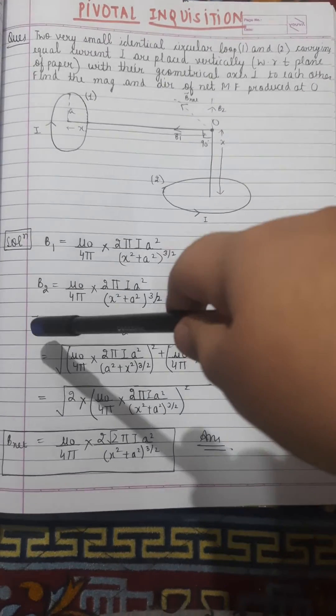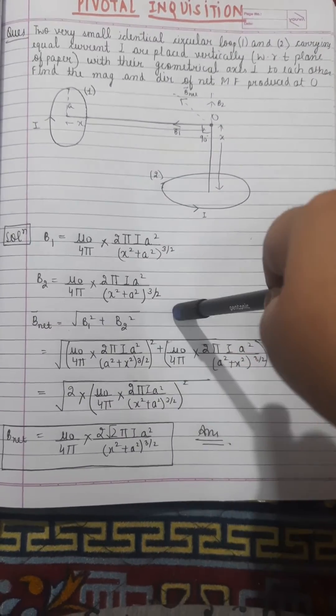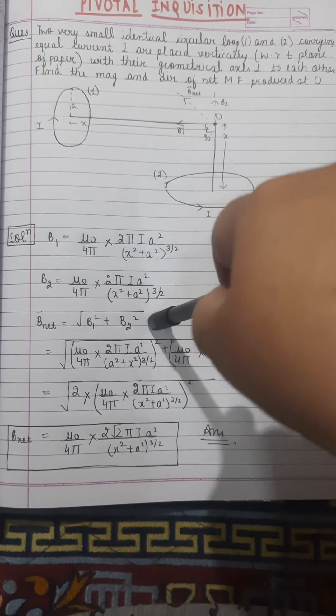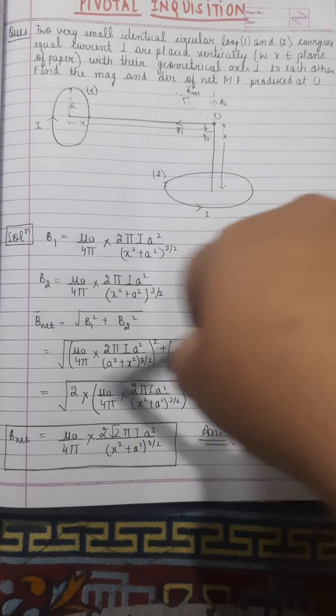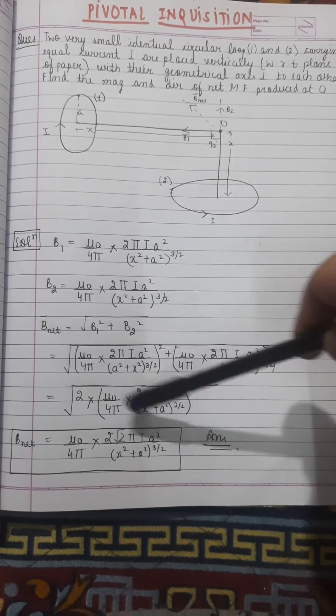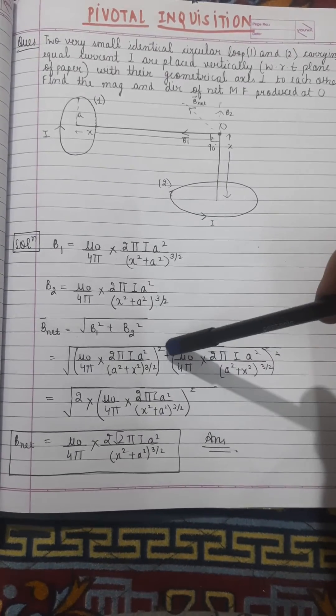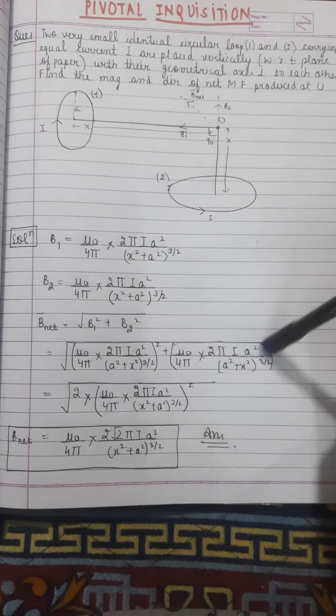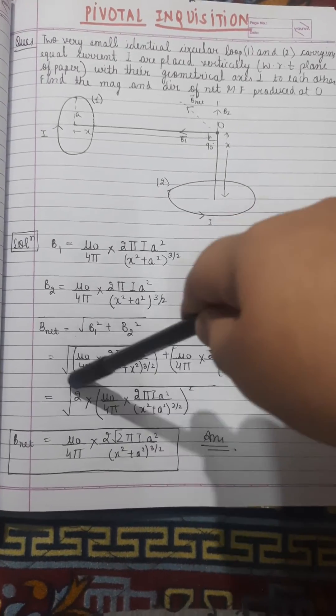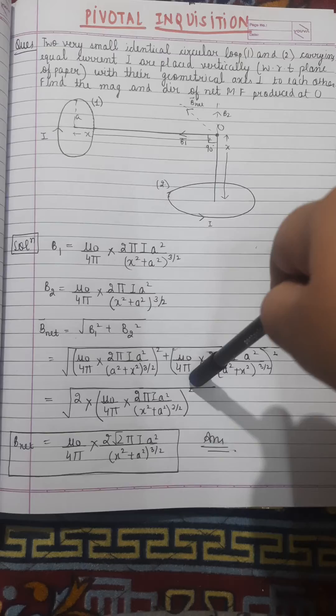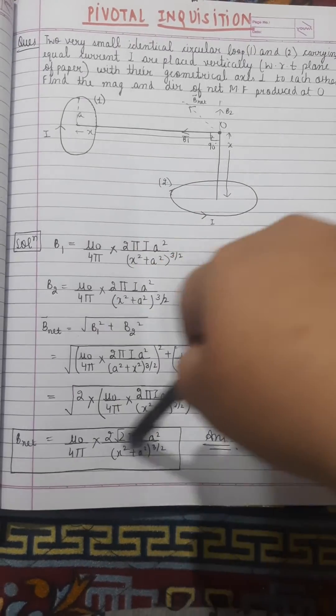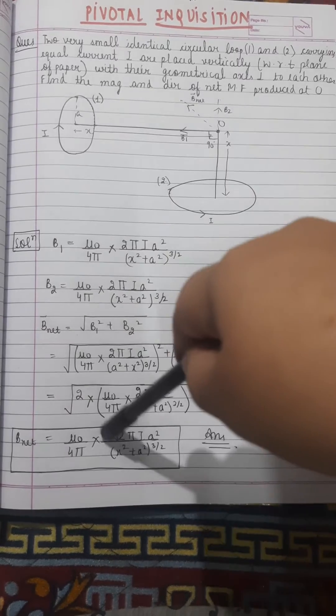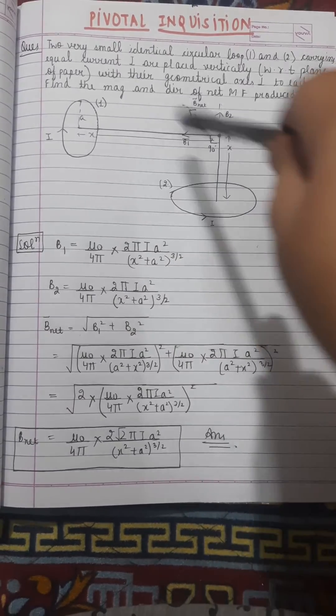The value of B₁ is given, and the value of B₂ is also written. We just need to substitute these values. We have μ₀/4π × 2πir²/(x²+r²)^(3/2), and this will be common so we take it as twice. The square will cancel out and we get the value as 2√2, with μ₀/4π × 2πir²/(x²+r²)^(3/2). Root 2 is being added.